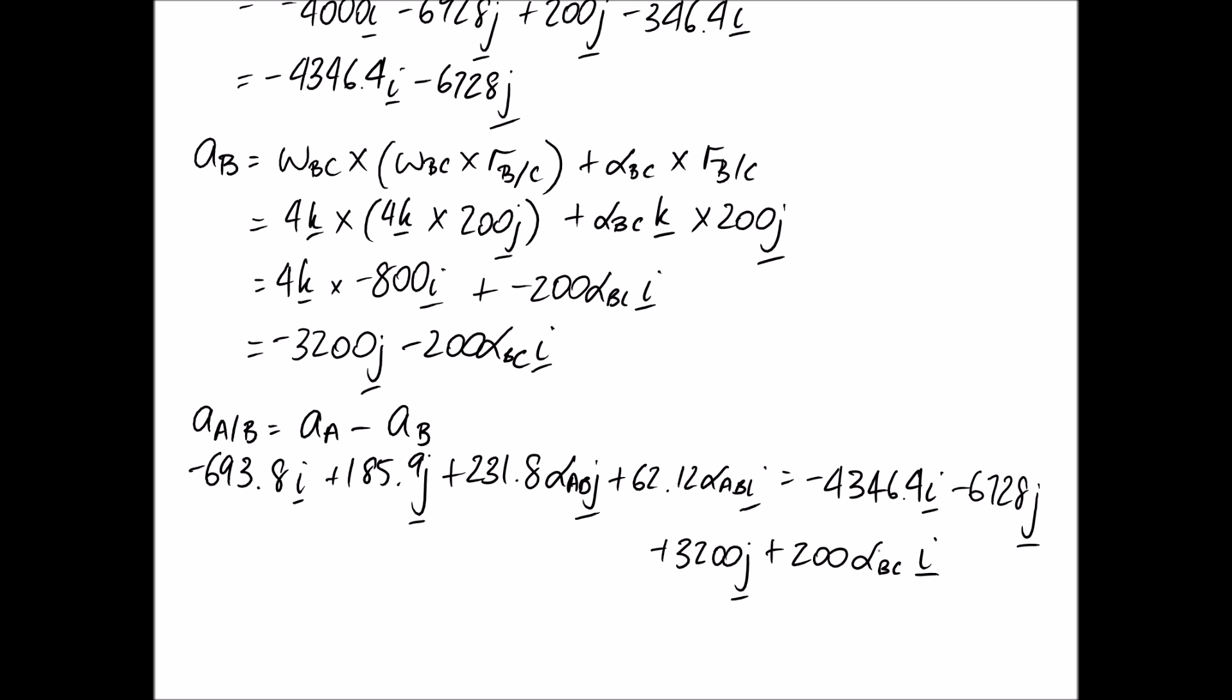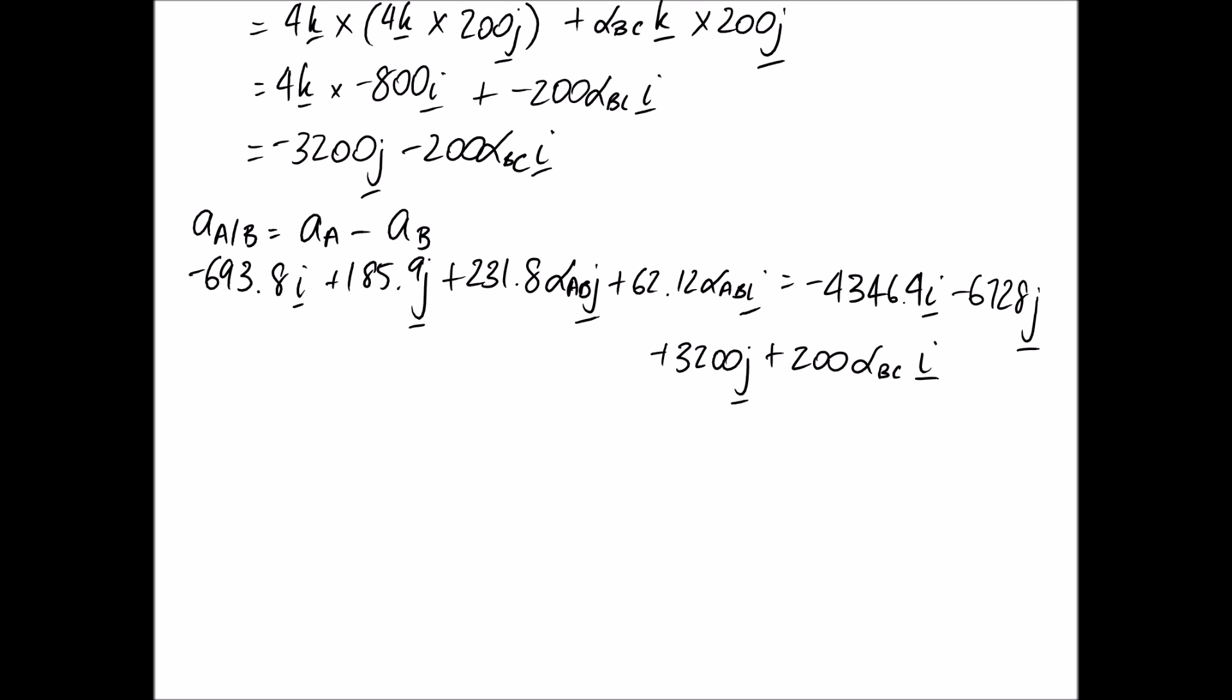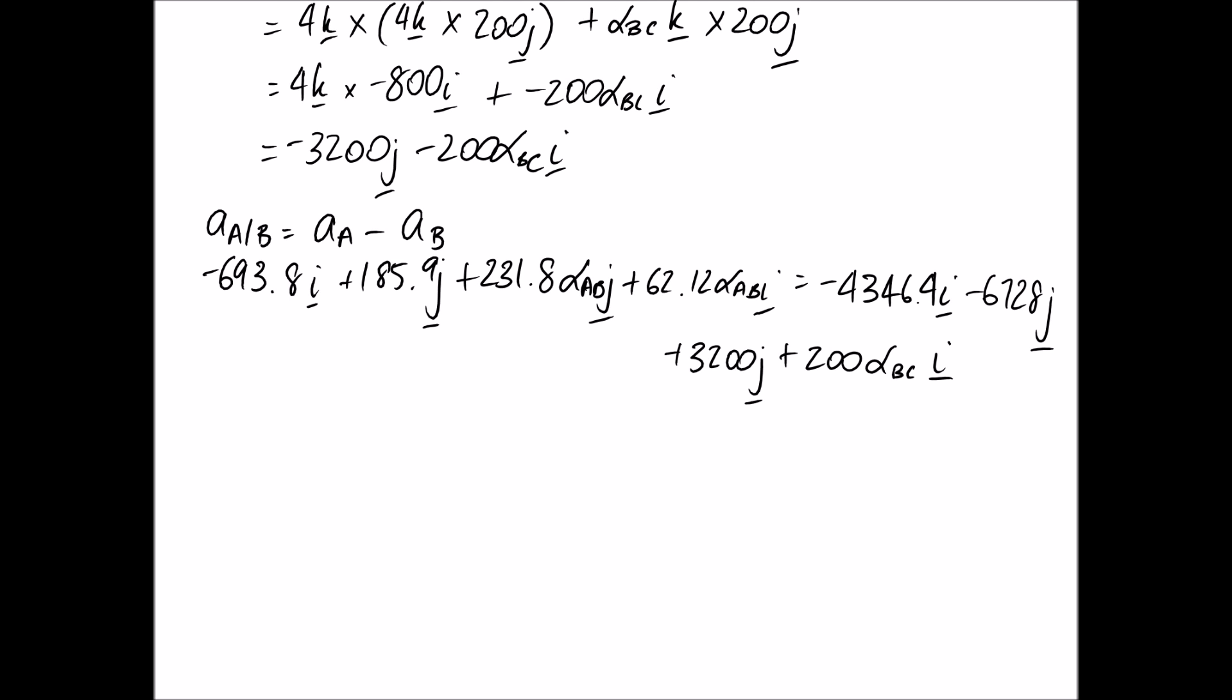So I think it's easiest to start with the J parts. This is because we only have the one variable or one unknown tied up on the J side of the equation in alpha AB. So taking them out, we get the following equation for our J side of the components.